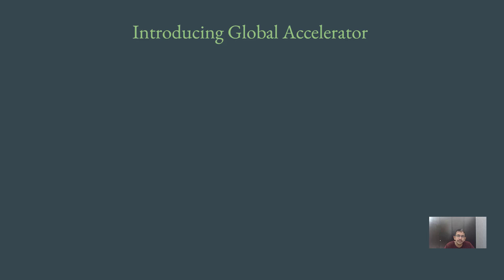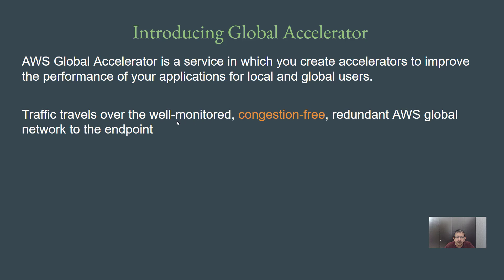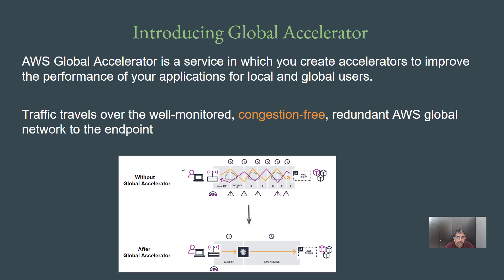In order to overcome this issue, AWS has released a service called Global Accelerator. At a high level, Global Accelerator allows you to improve the performance of your application for local and global users. One of the benefits is that traffic travels over a well-monitored, congestion-free, redundant AWS global network towards the endpoint. Without Global Accelerator, traffic from source to destination goes through multiple networks and at any point one of them could be congested, leading to performance degradation. Global Accelerator allows the traffic to flow through the AWS network itself, which is congestion-free, and AWS ensures there is no congestion — performance is almost guaranteed.